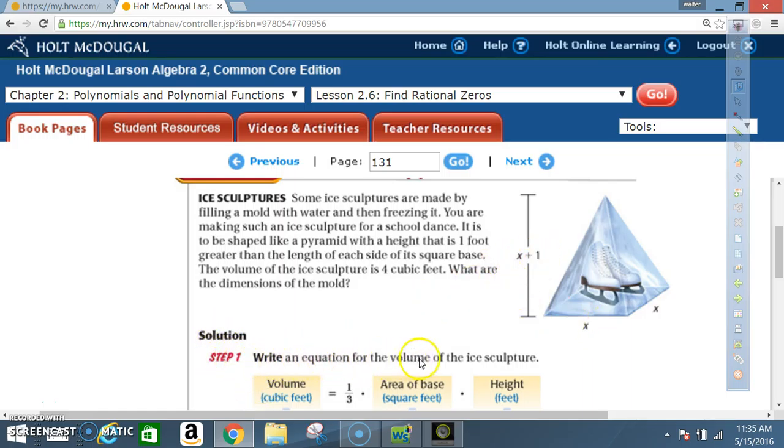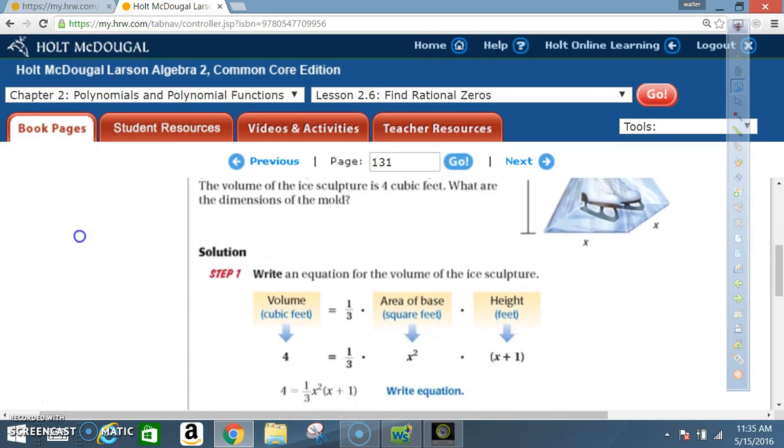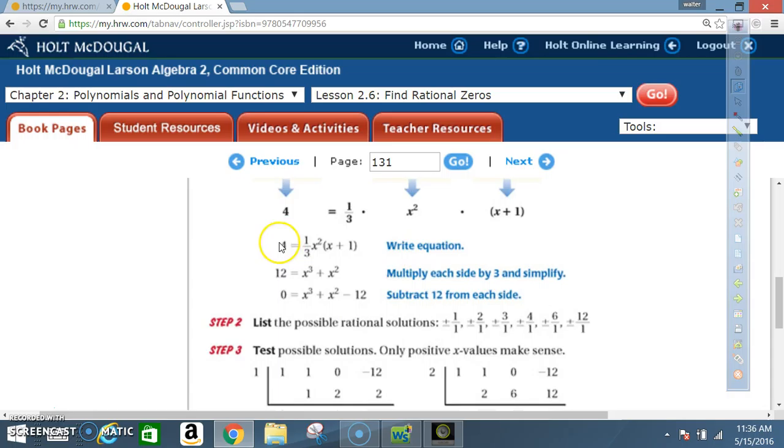Alright, so step one then, write an equation for the volume of the ice sculpture. Well, volume is equal to one third times the area of the base times the height. So they told us the volume was four. We bring down one third. The area of the base, the base is a square. It's going to be x times x, or length times width. So it's going to give us x squared times the height, which is x plus 1. Alright, so we write the equation now. 4 is equal to one third times x squared times x plus 1.